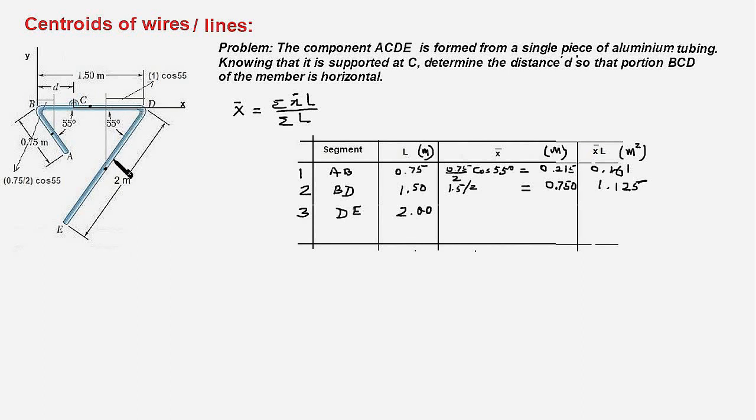And therefore this distance would be BD, that is 1.5 minus 1 times cosine of 55 degrees. This will work out to 0.926, and therefore X bar L would be 0.926 times 2 and will be equal to 1.852.